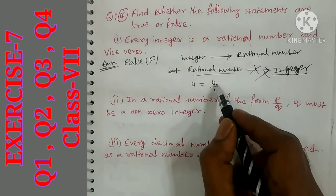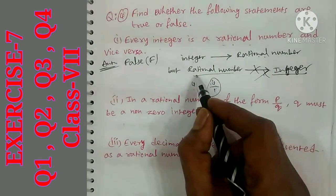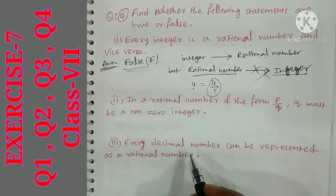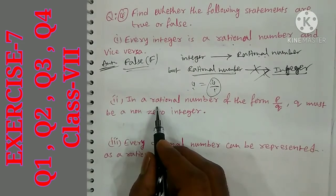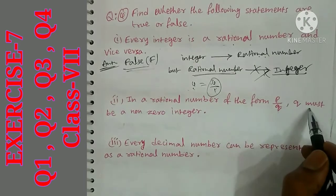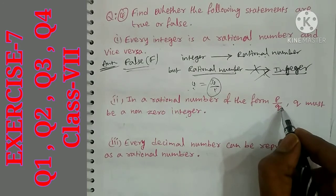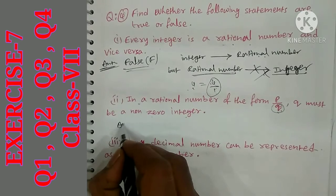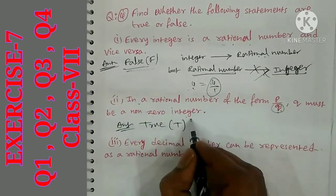For example, 4 is an integer and can be written as 4 by 1, so it is a rational number of the form P by Q where Q is a non-zero integer. So every integer is a rational number — that is true. But the vice versa — that every rational number is an integer — is false.